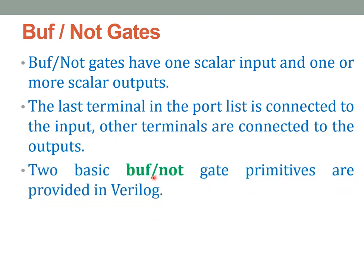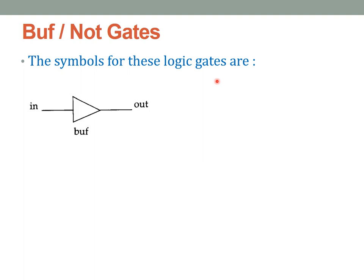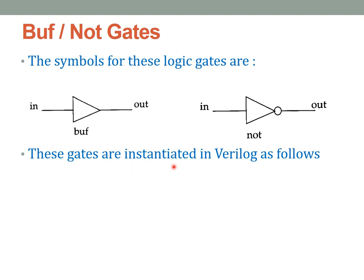The two basic buffer and not gate primitives provided in Verilog are 'buf', representing the buffer, and 'not', representing the not gate. The symbols for these gates are: a buffer has a simple triangular symbol with a single input and a single output, and a not gate has a single input, single output, with a bubble at the output. In Verilog, these gates are instantiated in the same way we did the AND/OR primitives.